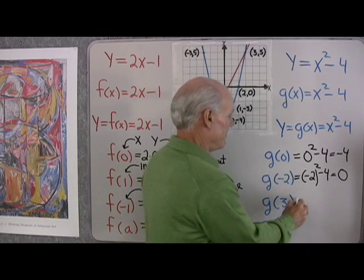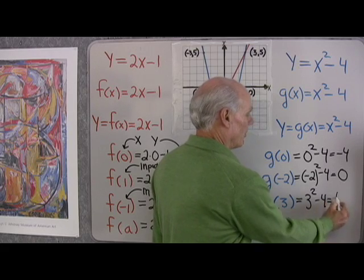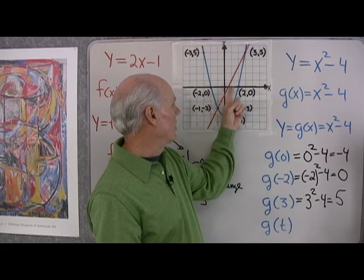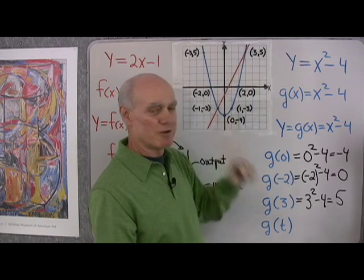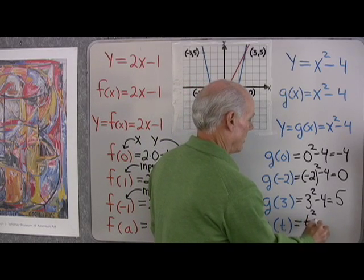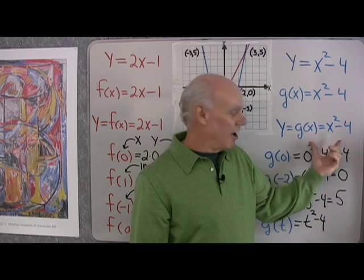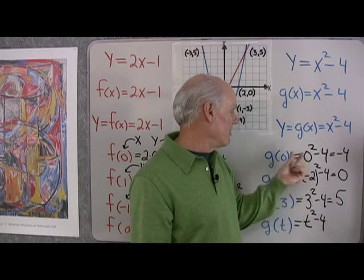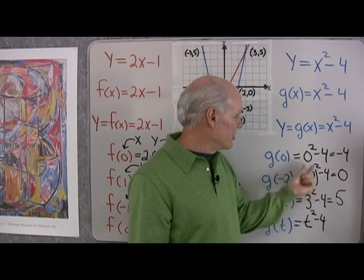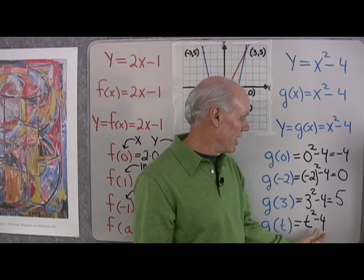g of 3: 3 squared minus 4 is 9 minus 4, which is 5. That means when x is 3, y is 5, and sure enough that point is on the graph. And g of t is t squared minus 4. Once I know the formula for my function, I never do anything different. Whatever's in the parentheses — whether it's 0, negative 2, 3, or t — I square it and subtract 4.